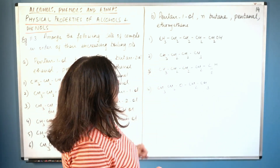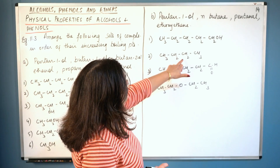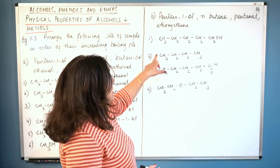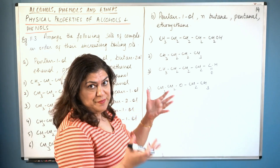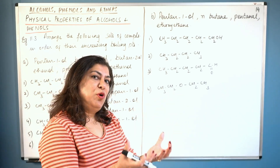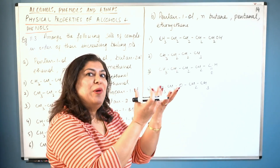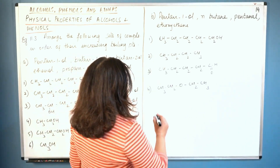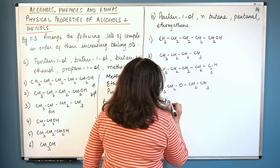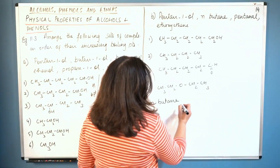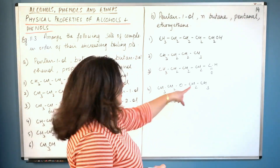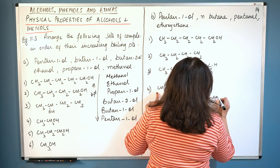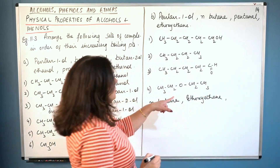Out of the remaining compounds, n-butane has four carbon atoms, ethoxyethane has four carbon atoms plus oxygen, so ethoxyethane is heavier. The heavier a molecule, the more difficult it is to boil. So the lowest boiling point will be of n-butane, and the next will be ethoxyethane.